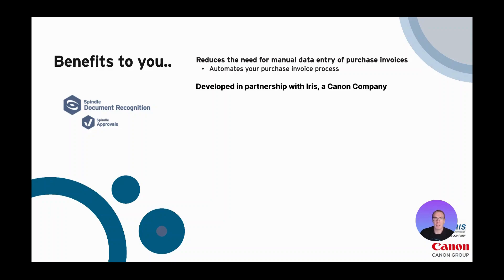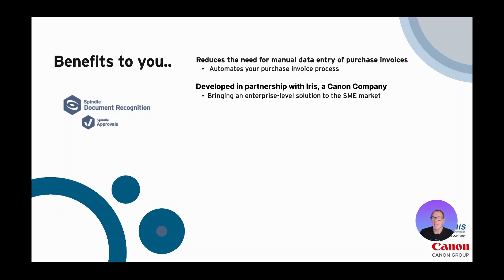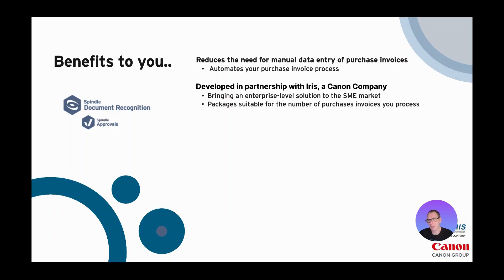In order to develop our Spindle Document Recognition solution, we've worked in partnership with Canon. Many people recognize the Canon brand from photocopiers and cameras, and they have a massive division within their organization that focuses on extracting data from documents, also known as OCR technology. The reason we decided to partner with Iris is because it's an enterprise-level solution used by massive organizations across the world. At Dracer we wanted to bring this technology to a level where anyone can benefit — quite often in the past these invoice automation solutions were reserved for those wanting to invest lots of money, but now you can benefit even if you're just processing a couple of hundred purchase invoices a month.